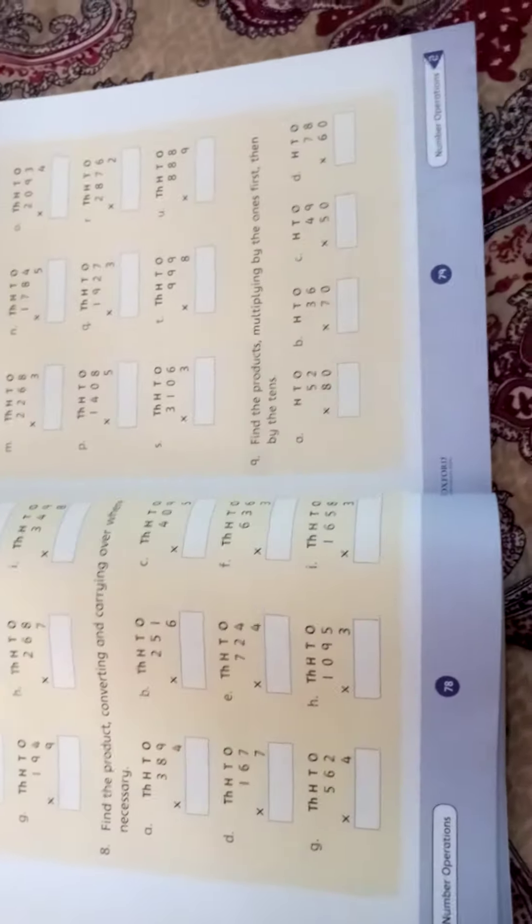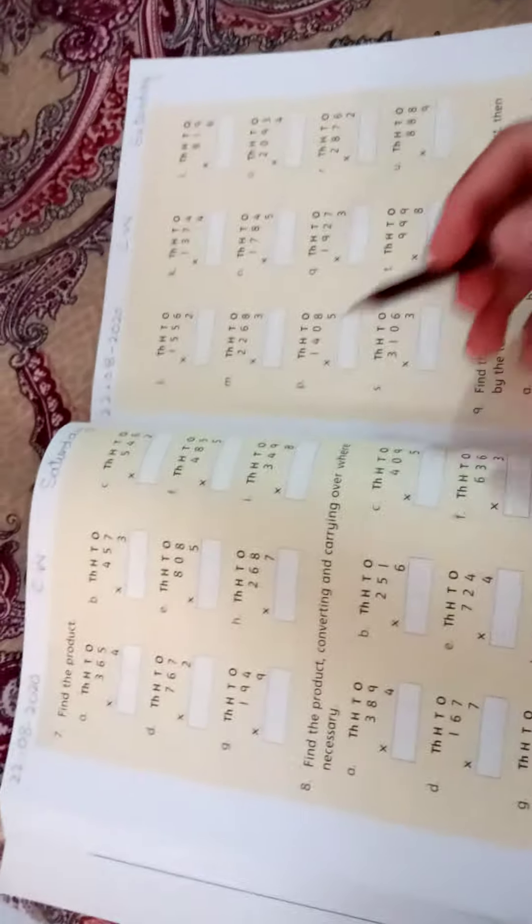Assalamualaikum students. Today we are going to start work on Countdown Book 3. Let's take out the new page we will start today. Page numbers are 78 and 79. Page 78 has multiplication and page 79 as well.